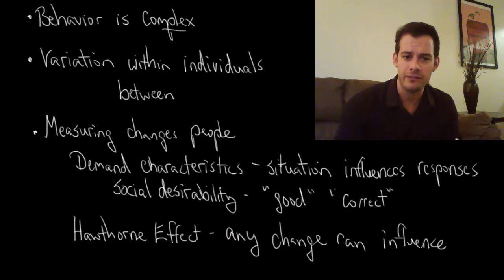So these three problems we have of complexity, variation, and responsiveness to situations are problems that we can't really eliminate from psychological research. They're always going to be there. But we can do our best to be aware of them and then to try to reduce their influence in order to get more accurate data on human behavior. If you found this helpful, please like the video and subscribe to the channel for more. Thanks for watching.